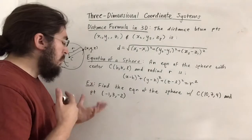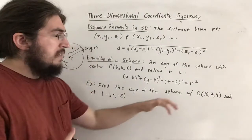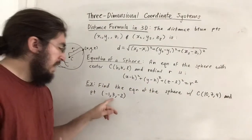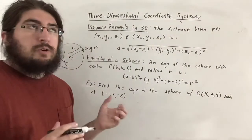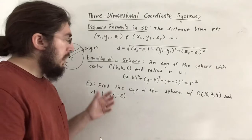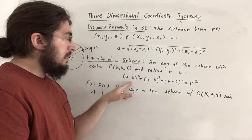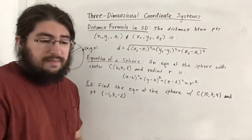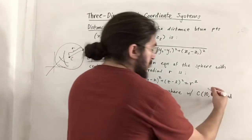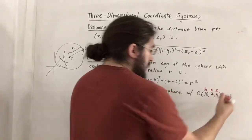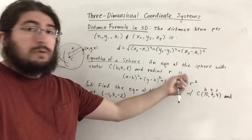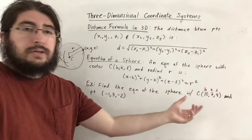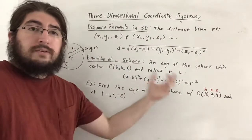Now we'll move on to an example where we apply both formulas. We want to find the equation of the sphere with center (10, 7, 4) and a point on the sphere (−1, 3, −2). The first order of business is to find r. We can label the center right away as h, k, l — we have that part of the equation. All we don't have is r, and we know r is the distance between any point on the sphere and the center.